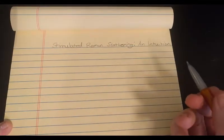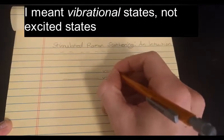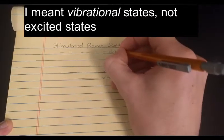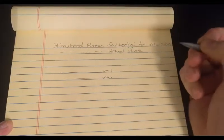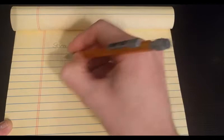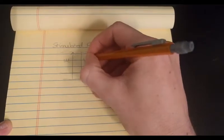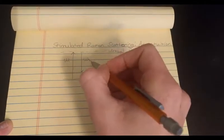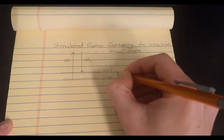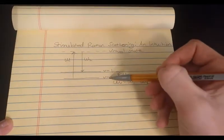So in general when people draw out what the Raman process looks like, they draw a virtual state and two excited states, v equals zero and v equals one. This is the virtual state. And in Raman you have say a laser coming in at some frequency omega one and then there's a downward transition, omega two, and you detect the difference between those as the frequency of the vibration, omega v. So omega v equals omega one minus omega two, and this would be Stokes-Raman.